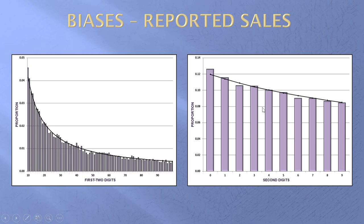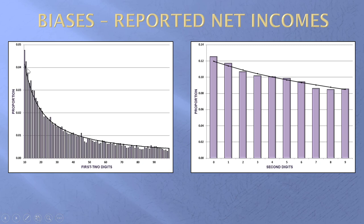I think it's happening, but it doesn't look like it's coming exactly from here. Maybe some of the eights became nines, and the sevens became eights, and the sixes became sevens. So it looks like it's happening, but it's not absolutely clear. Looking at net income numbers, there is a reasonably nice conformity for the first two digits. There are extra second-digit zeros, but we don't have the shortage there — we have a shortage at other positions. So it's somewhat consistent with this still happening.